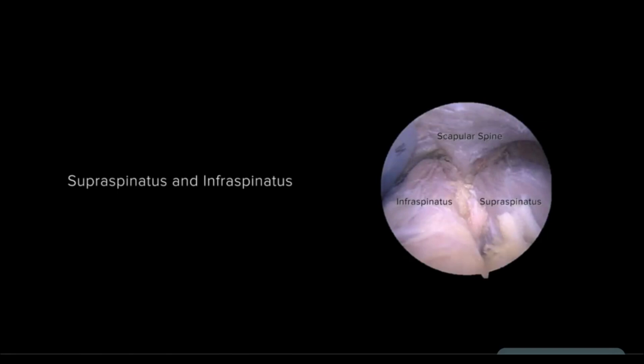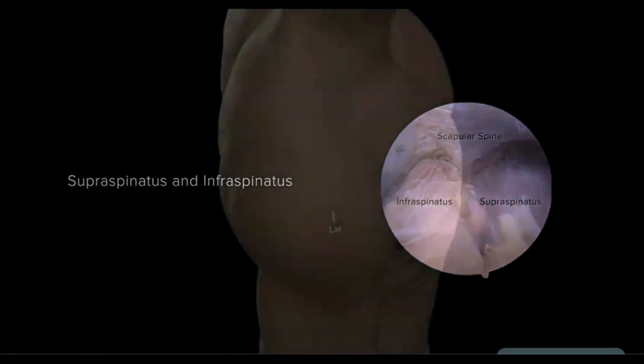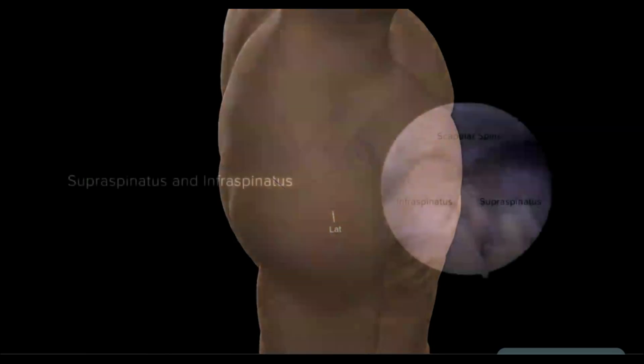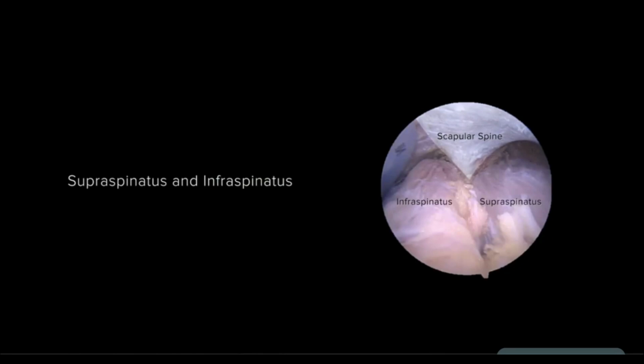This arthroscopic image is in the subacromial space of a right shoulder, viewing from a lateral portal. This image provides a clear view of the scapular spine, located centrally and separating the supraspinatus muscle anteriorly and the infraspinatus muscle posteriorly.